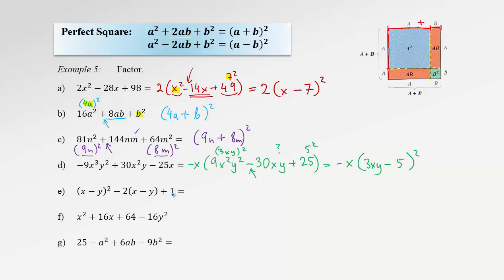In the next example, think globally — consider the whole bracket as a new variable. We have something squared minus 2 times something plus 1. That's exactly the perfect square formula: first term squared, minus double the product, plus 1 squared. We fold it back into the perfect square of the difference. The last term is 1 and the first term is the whole bracket, so the result is (bracket minus 1) squared.